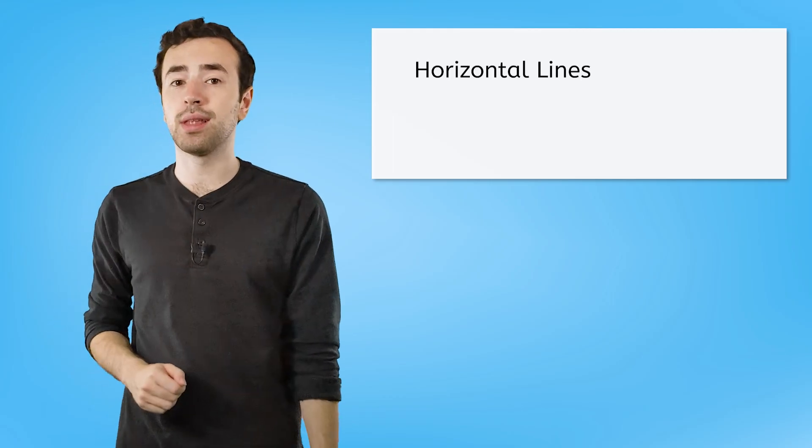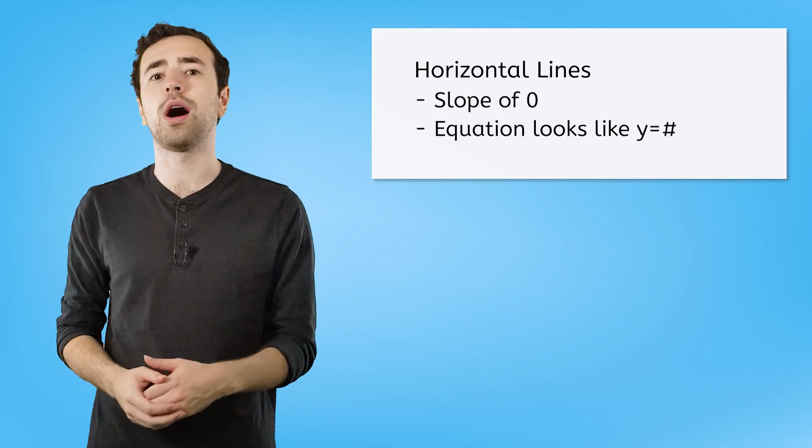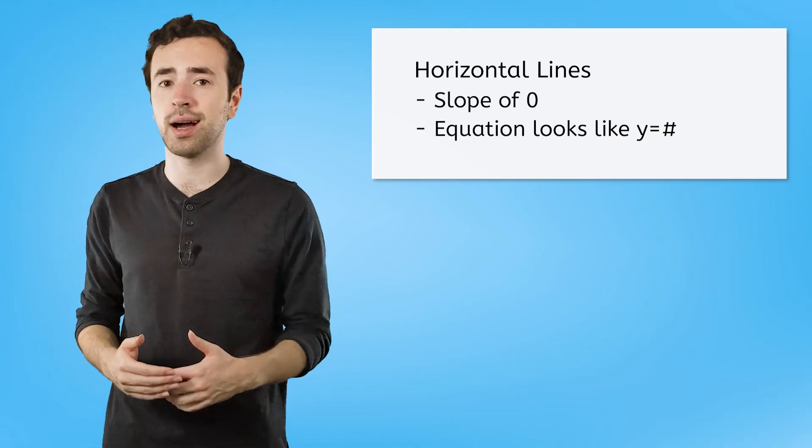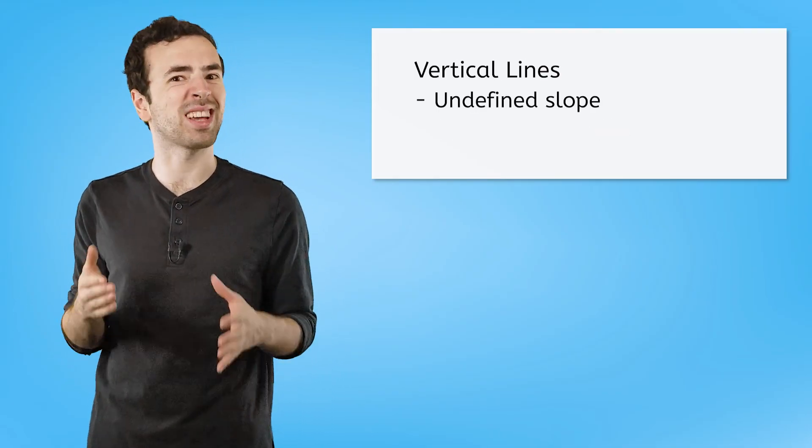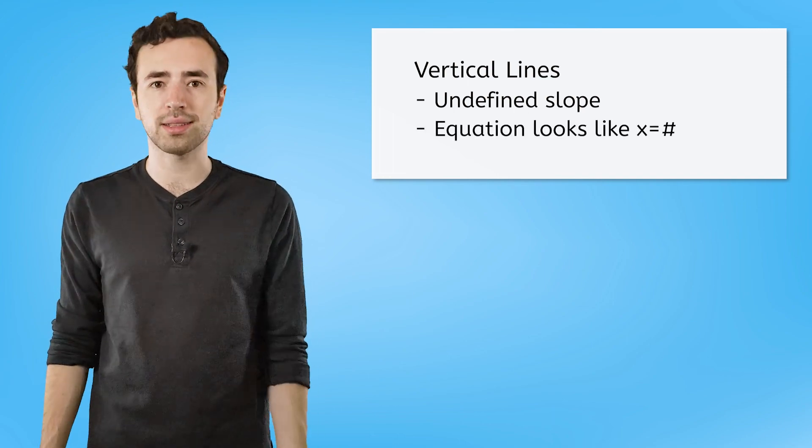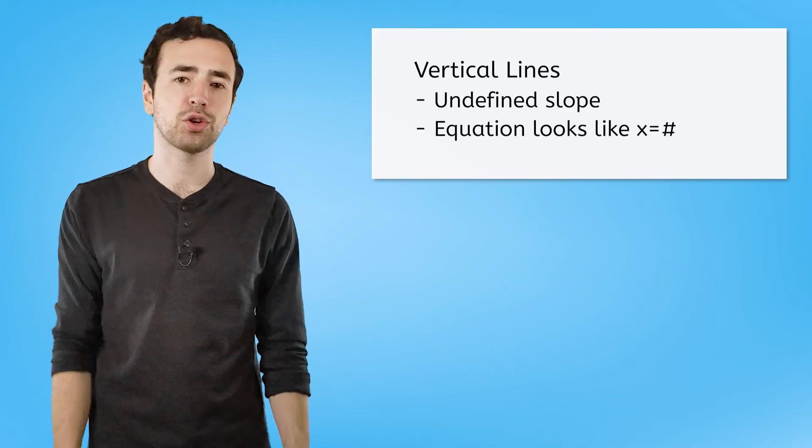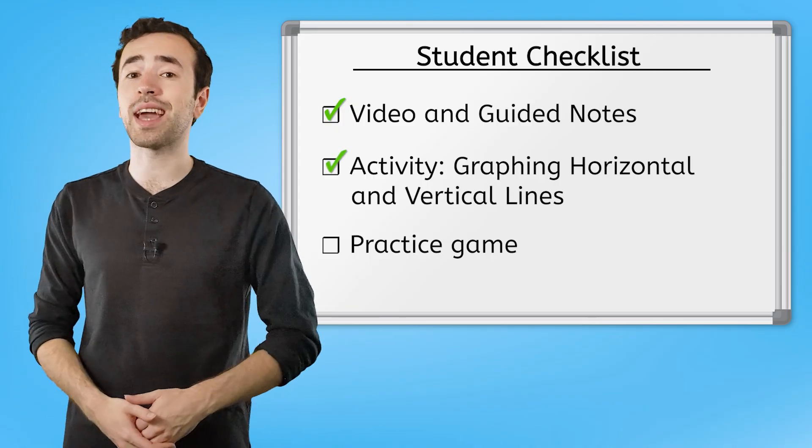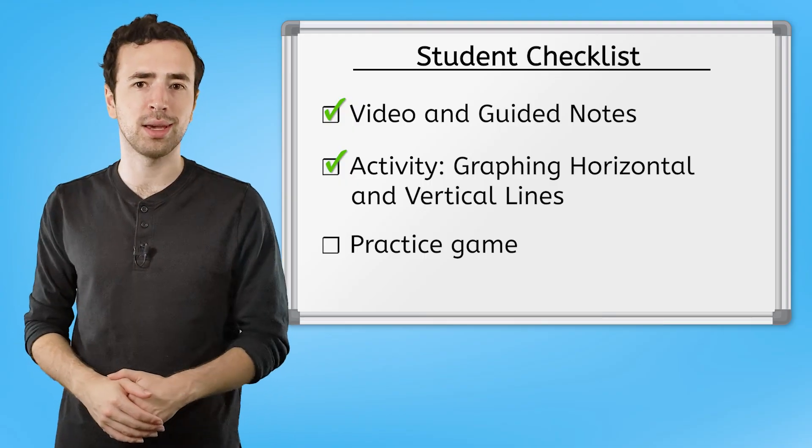Remember, since horizontal lines have a slope of 0, their equation will always look like y equals a constant. That equation is describing how all of the points on a horizontal line share the same y-coordinate. For vertical lines, their slope is undefined, and their equations will look like x equals a constant, which describes how all of the points on a vertical line share the same x-coordinate. Before you move on to the online practice, you should complete the activity in your PDF to explore a little bit about graphing horizontal and vertical lines. Good luck, and I'll see you next time!